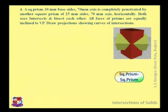Here both are prisms. The point of intersection or line of intersection would not be a curve — it would be a straight line because both solids have straight lines. In the case where both solids are prisms, the curve of intersection would be a straight line.